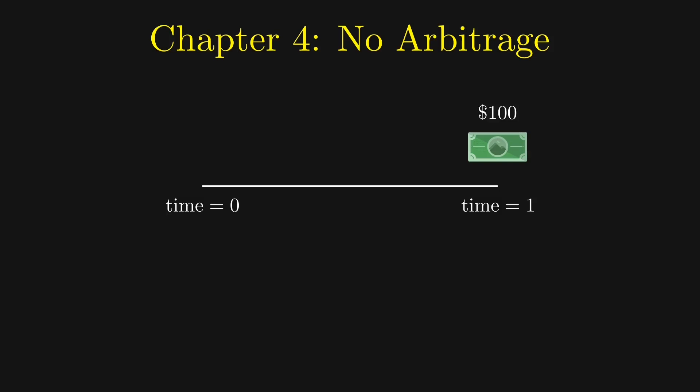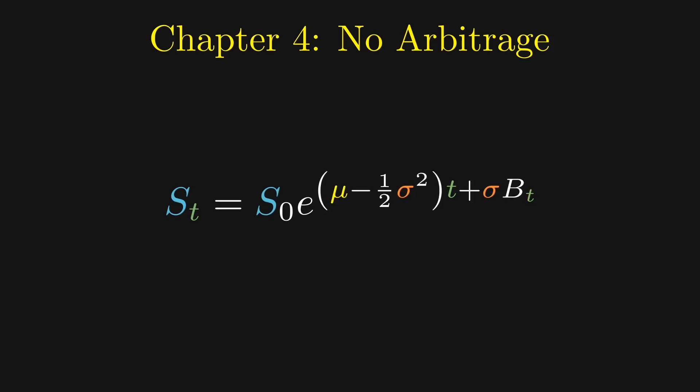The same logic applies backward. How much is $100 one year later worth today? Instead of multiplying by e to the power r, we divide. In other words, we multiply by e to the power negative r. Again, when we use an arbitrary period t instead of one year, the multiplier becomes e to the power negative rt. Going back to our stock model, we expect our stock to grow at a rate of r. Therefore we have this equation.